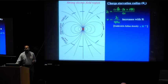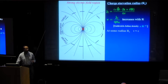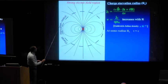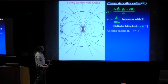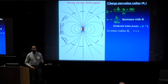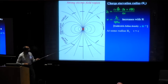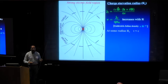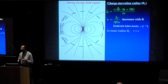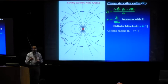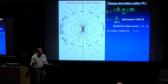At some radius, which is R_c, the V becomes order c. And that's the charge starvation radius. That means that beyond this radius, the charge density, there's just not enough charge density to supply this current for the Alfvén wave, curl of delta B.